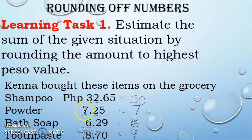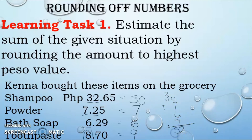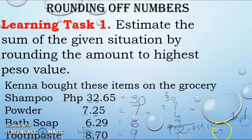We now have 6 pesos, 7 pesos, 9 pesos, and 30 pesos. We can now add: 30 plus 7 plus 6 plus 9. That gives us: 7 plus 6 is 13, plus 9 is 22, then 22 plus 30 — bringing down the 2 and carrying: 52 pesos is the estimated sum.